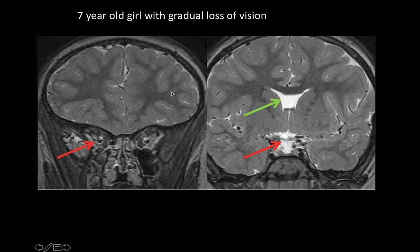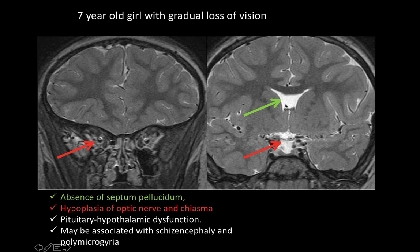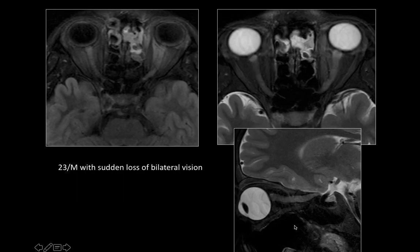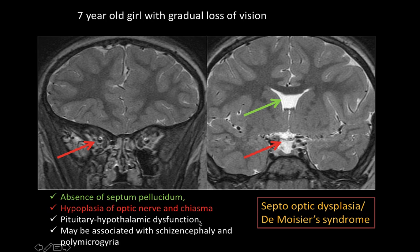This is a seven-year-old girl who had gradual loss of vision. We see very thin optic nerves associated with dilated or prominent subarachnoid space in the optic nerve sheath. Also note the optic chiasm is very thin and there is absence of septum pellucidum. This is septo-optic dysplasia, also called De Morsier's syndrome, associated with pituitary and hypothalamic dysfunction, or may be associated with schizencephaly and polymicrogyria.